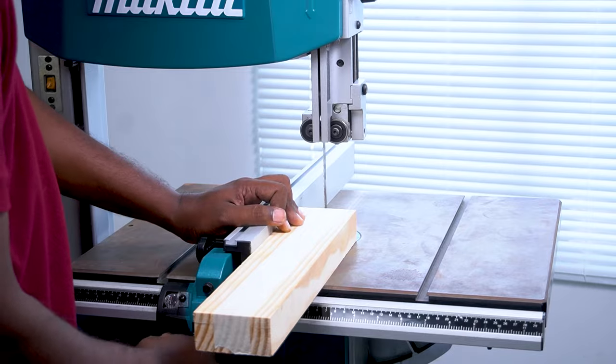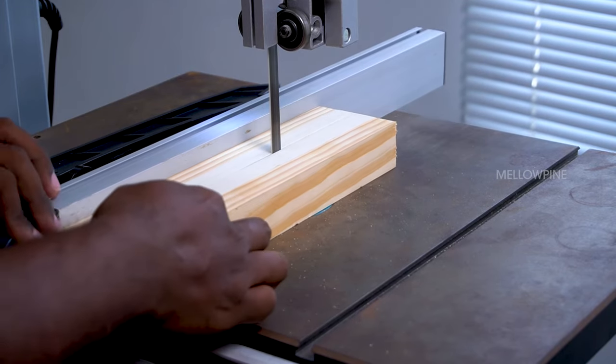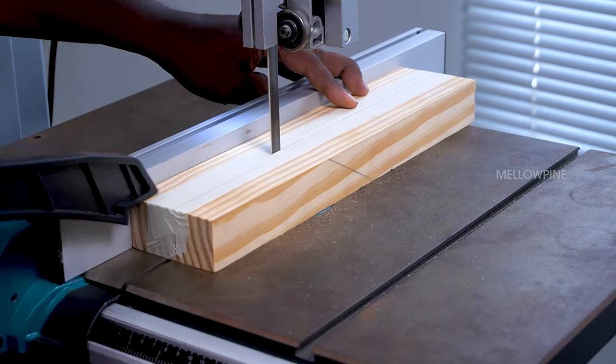Turn on the saw and make the ripped cut by slowly pushing the wood along the blade. Remember to push the wood piece firmly against the fence to get an accurate cut.